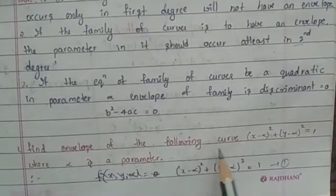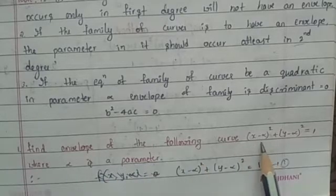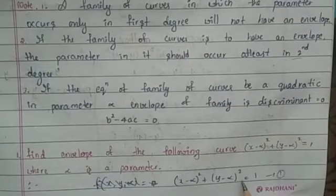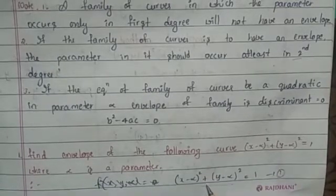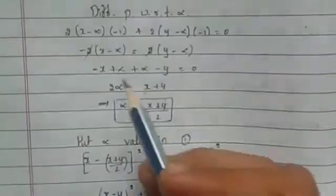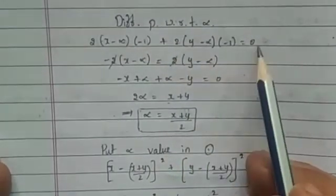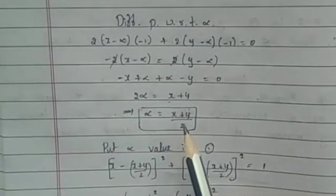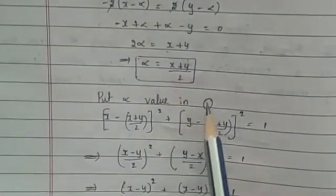Find the envelope of the following curve: (x − α)² + (y − α)² = 1, where α is a parameter. The given equation is (x − α)² + (y − α)² = 1. Differentiate partially with respect to α: 2(x − α)(−1) + 2(y − α)(−1) = 0. Simplify this to get the value of α = (x + y)/2.